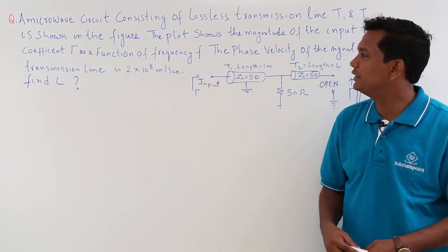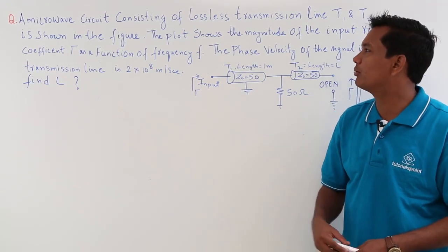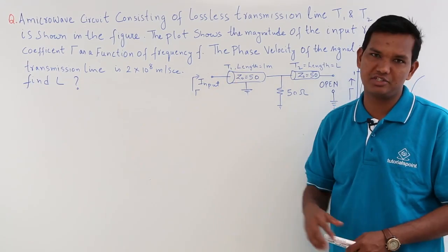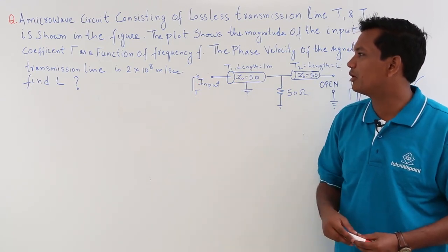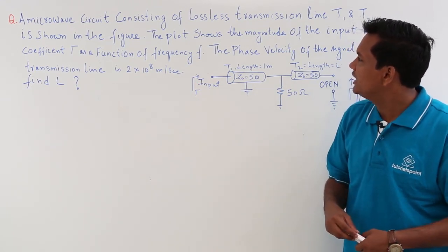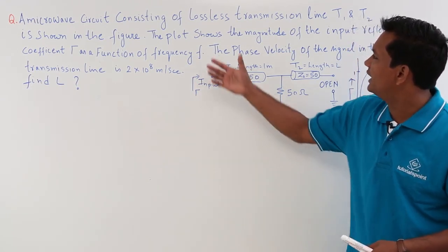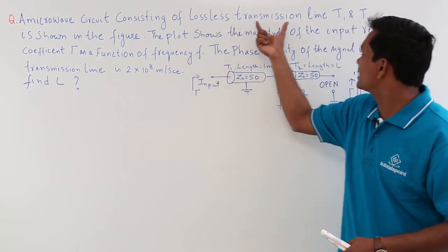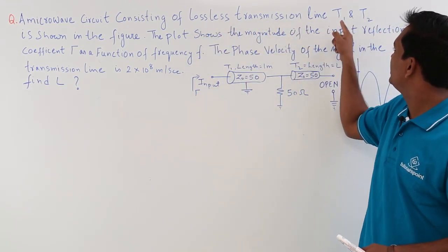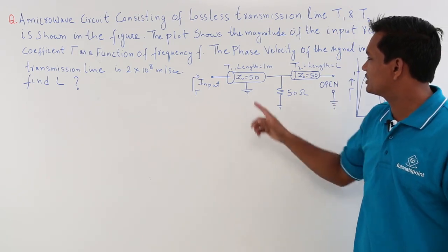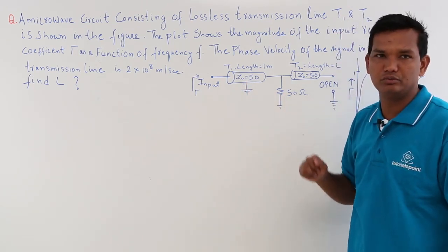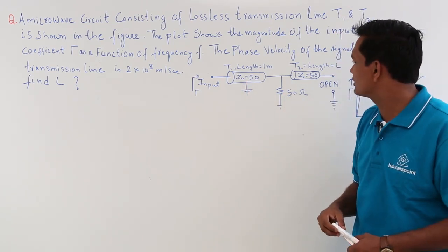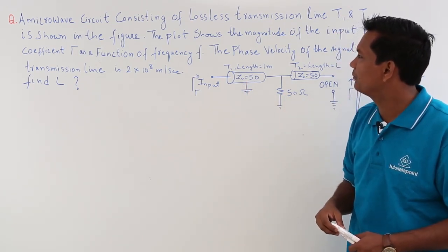In this class, we will try to solve one more problem of transmission line. Let us try to understand the problem first. It is given that a lossless transmission line T1 and T2.